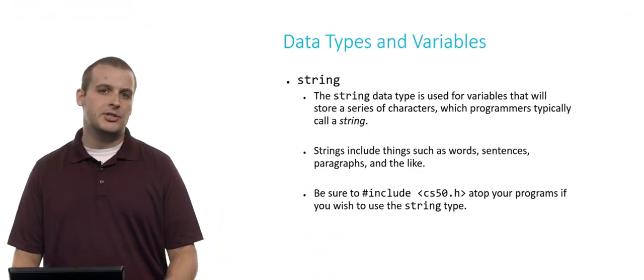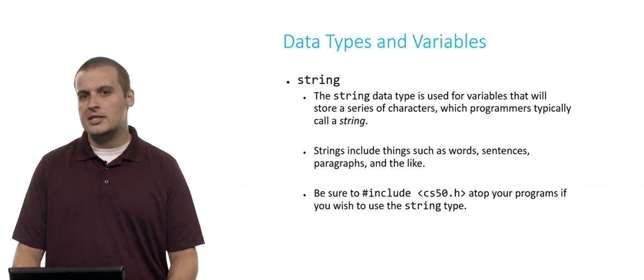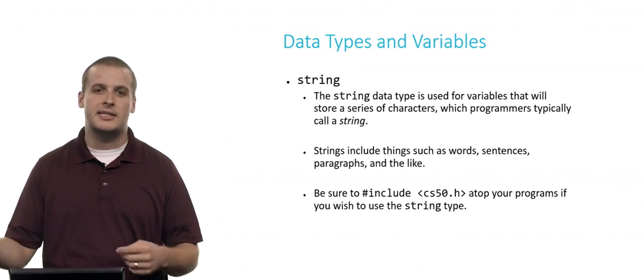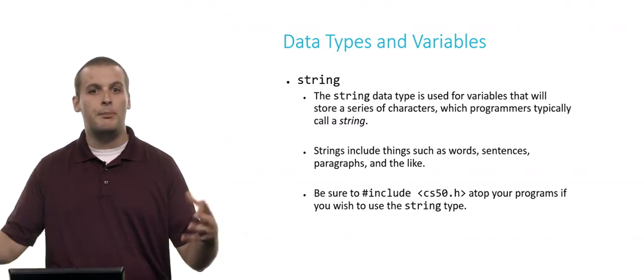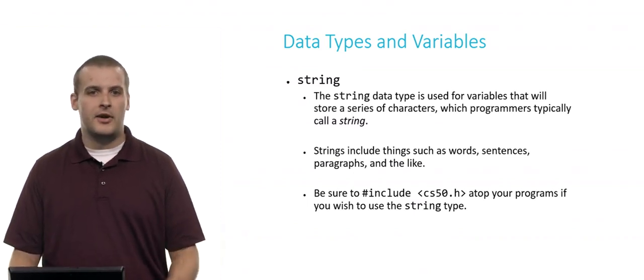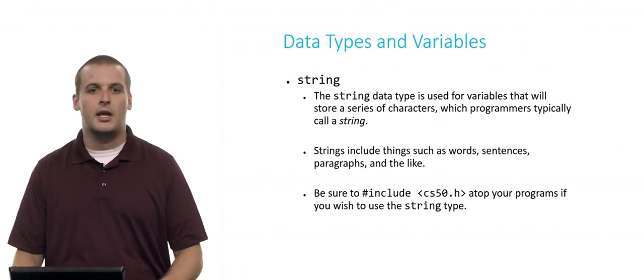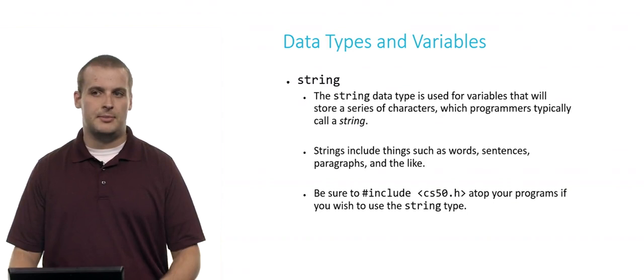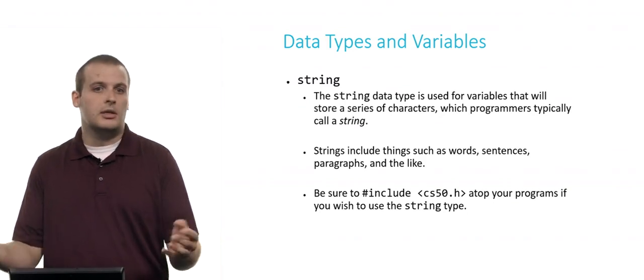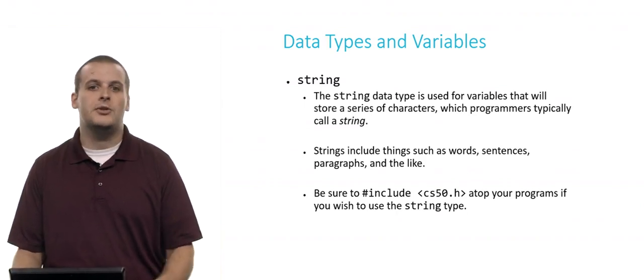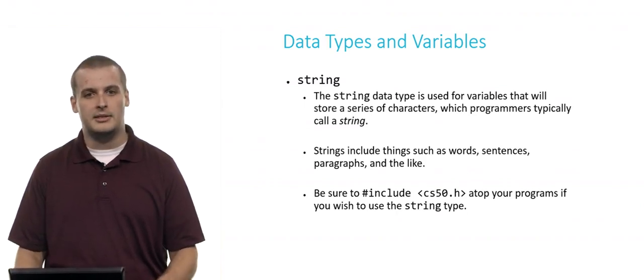The other major data type that we provide for you in the CS50 library is string. So what is a string? Strings are really just words. They're collections of characters. They're words. They're sentences. They're paragraphs. It might be whole books even. Very short to very long series of characters. If you need to use strings, for example, to store a word, just be sure to pound include CS50.h at the beginning of your program so you can use the string type. And then you can create variables whose data type is string.